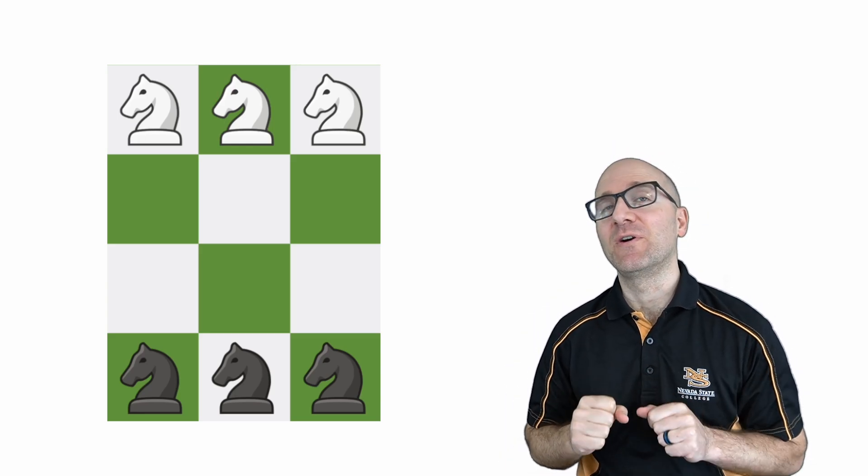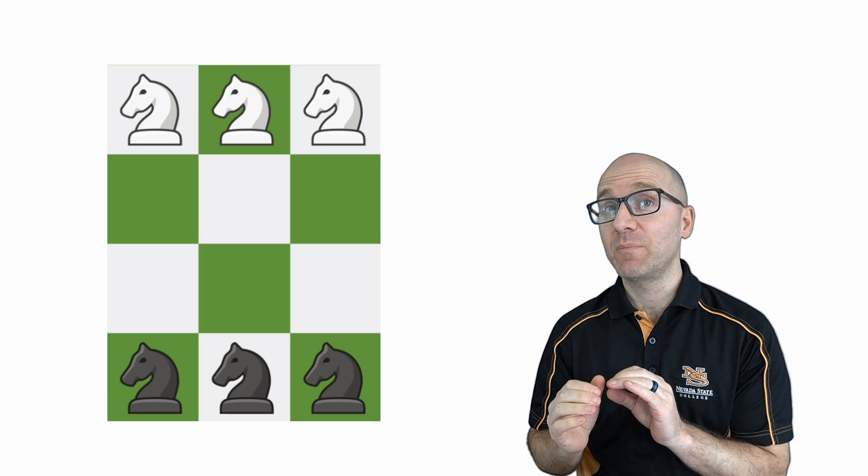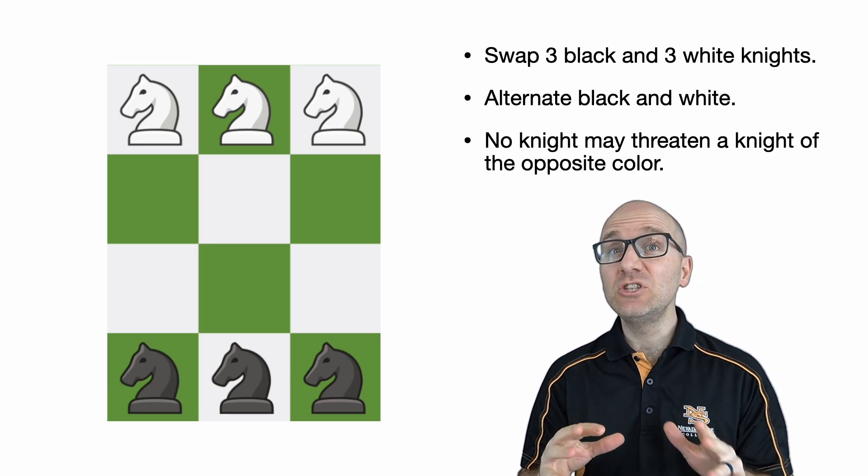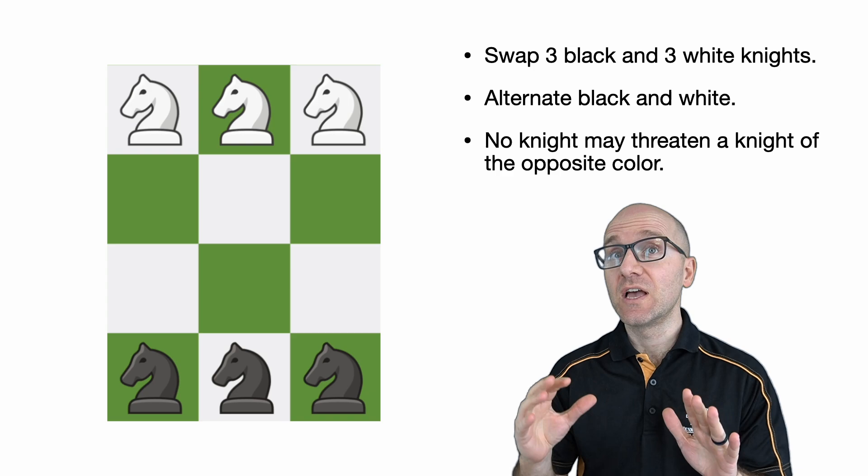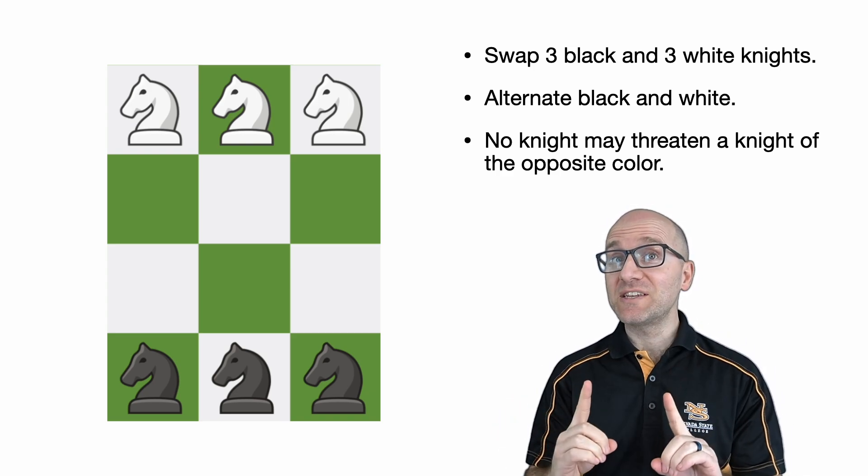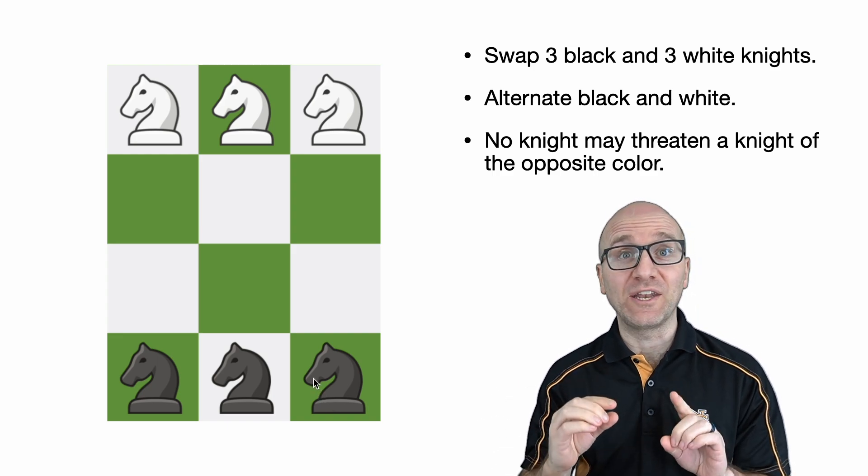Today I have a challenging problem for you. On this 4x3 chessboard, there are three white knights along the top and three black knights along the bottom. Using only legal chess moves, alternating turns, we need to swap the locations of the black and white knights, but at no point in time can a white knight threaten a black knight or a black knight threaten a white knight.